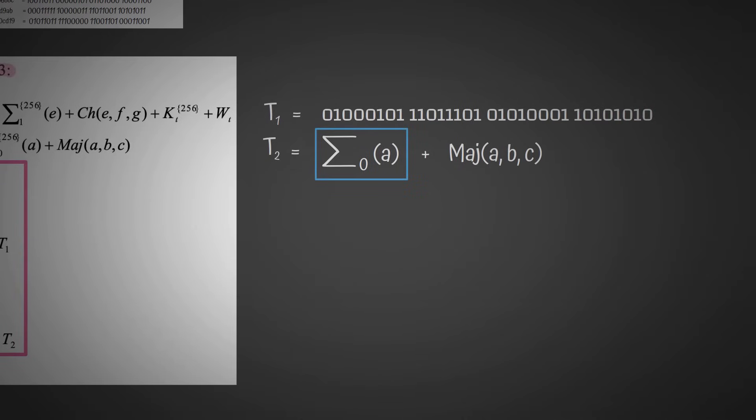Let's take sigma 0 of A. Here is A, and once we do all the right rotations, and then the bitwise addition modulo 2, we get this output. If we take the majority of A, B, C bitwise, we get this as I just showed. And here is our output for T2.